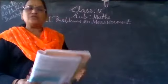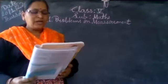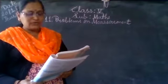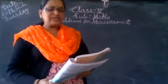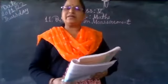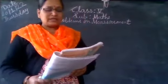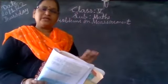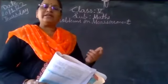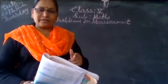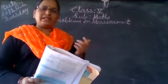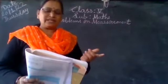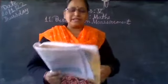Let's see children, question number 4. If half a litre of milk costs rupees 22, how much will 7 litres cost? The cost of half litre is given, so we will find the cost of 1 litre and then multiply it by 7, so we will get the cost of 7 litres.